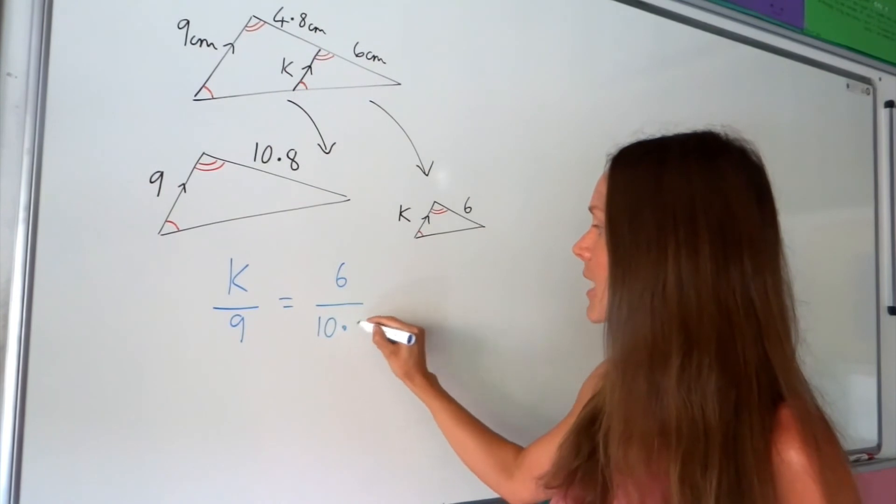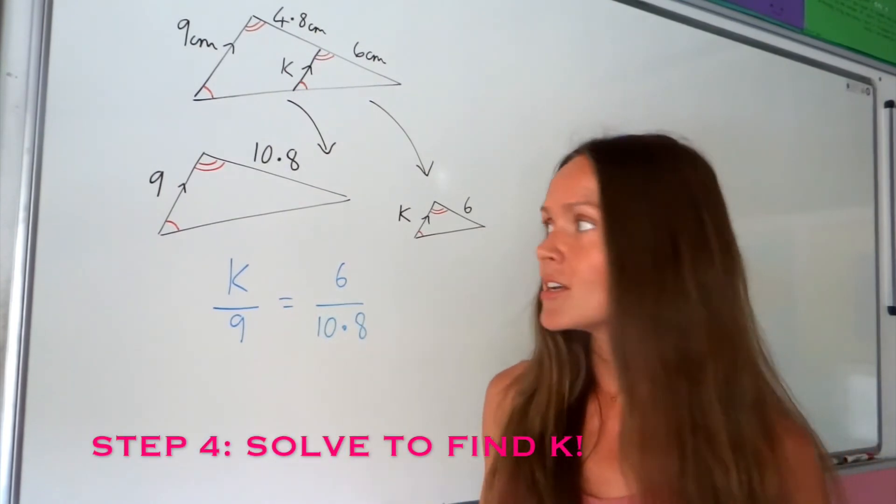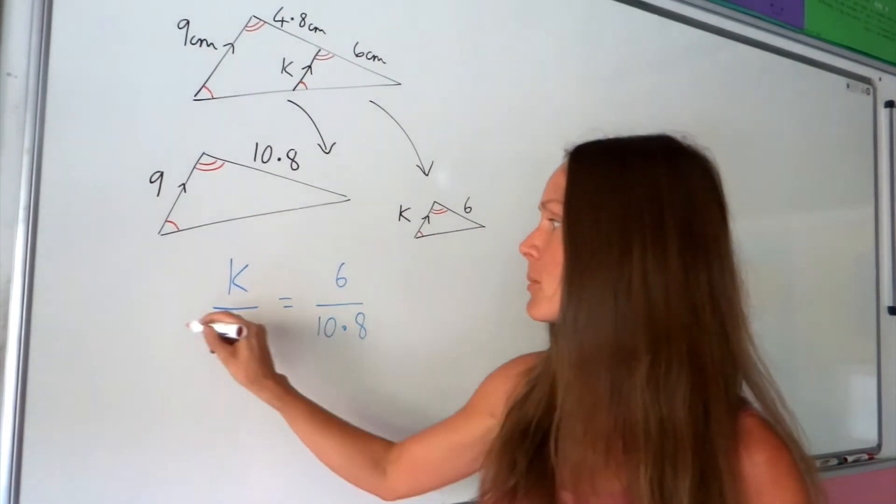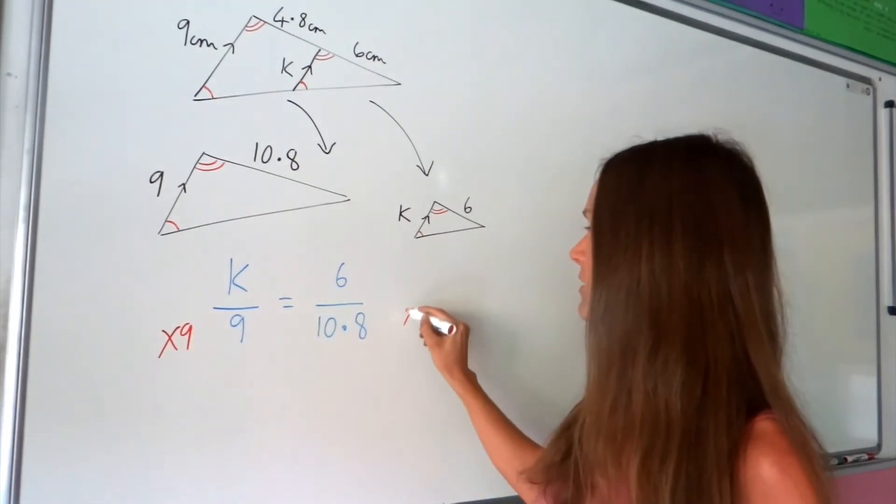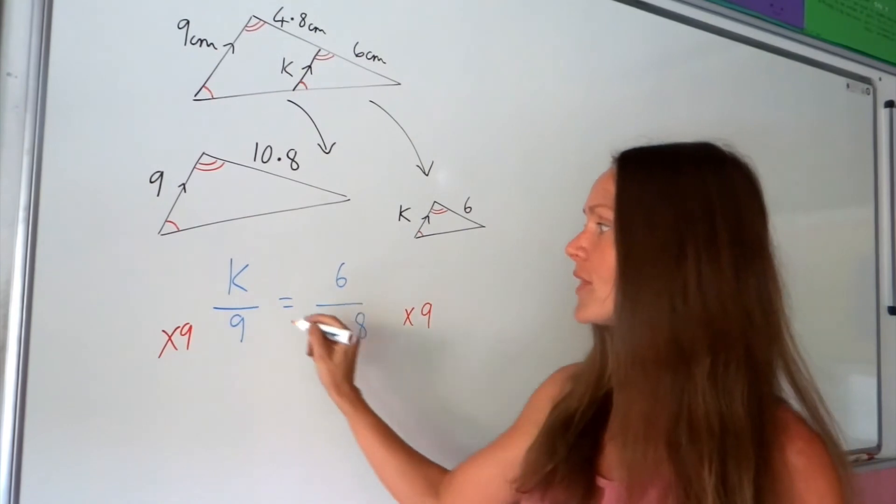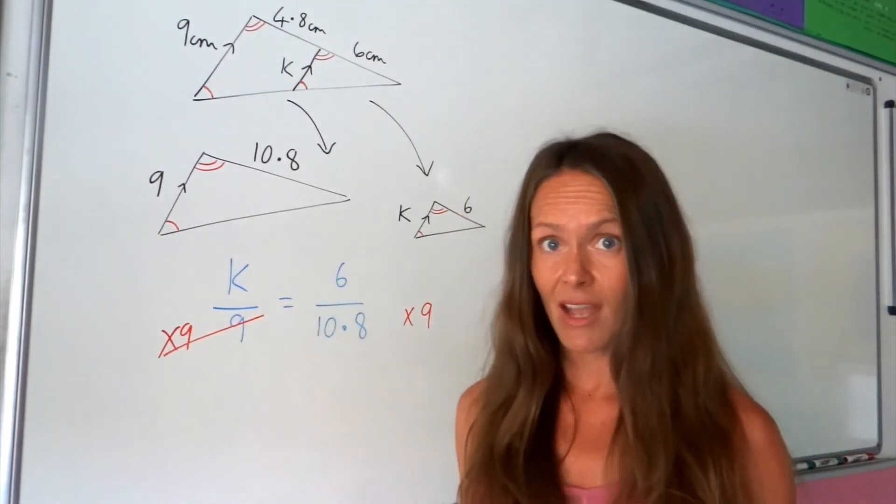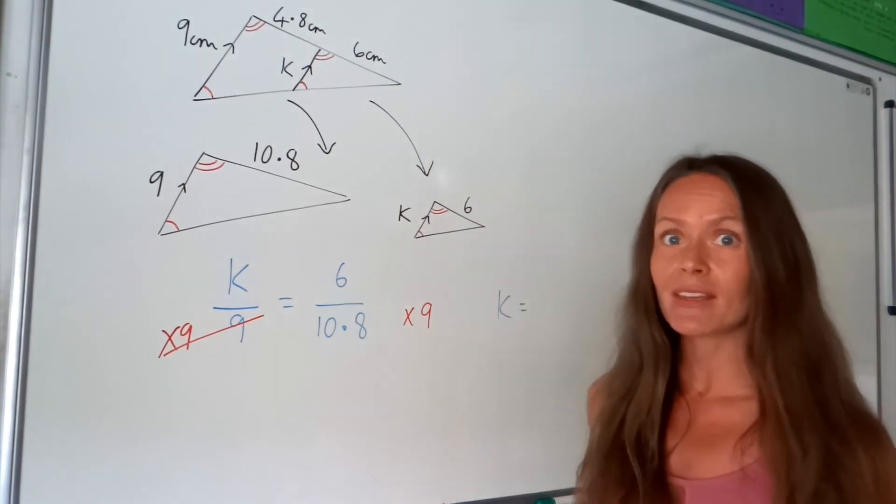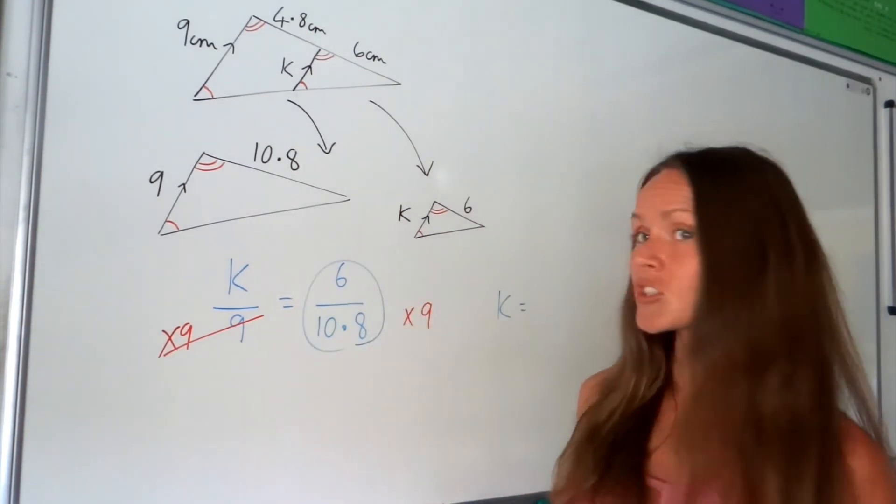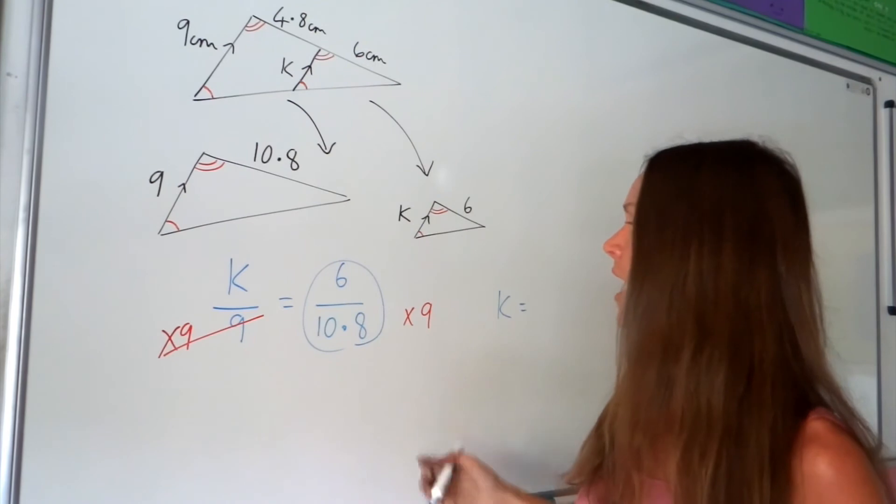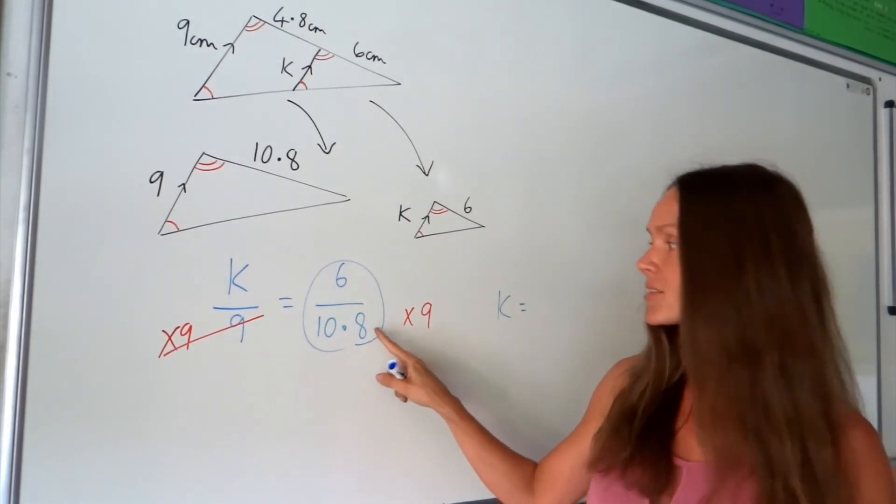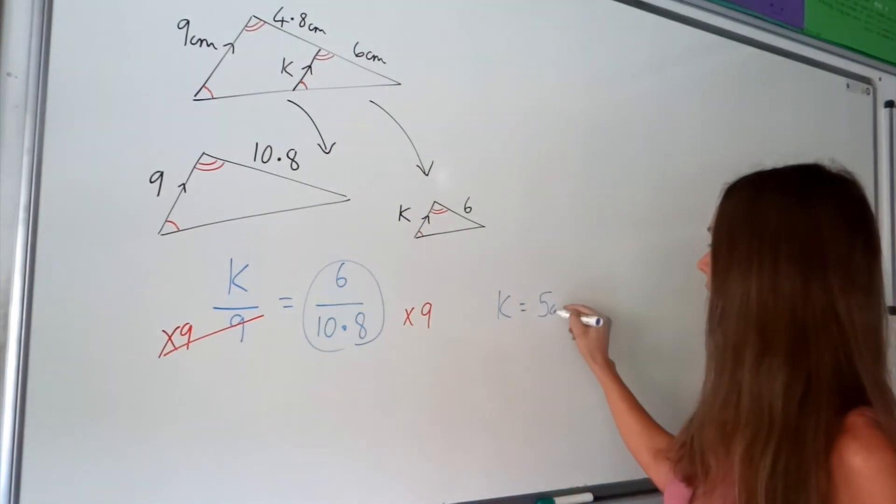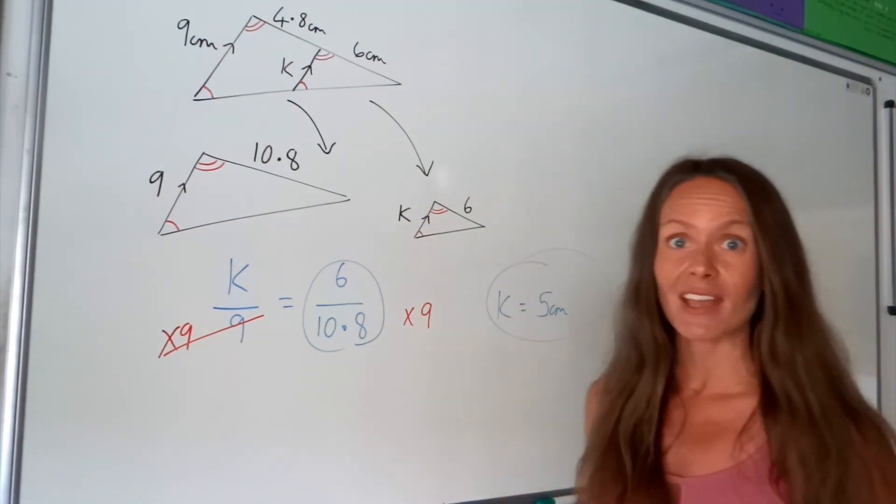Then all that's left to do is to solve the equation. So the opposite of dividing by 9 is to multiply. So we multiply by 9 on both sides of our equation. On the left hand side they just cancel and we're left with k. And on the right hand side you need to pop it in the calculator. So put that fraction in the calculator or the division and then multiply that answer by the number 9. And hopefully you get 5 centimetres. Okay so that is the value of k.